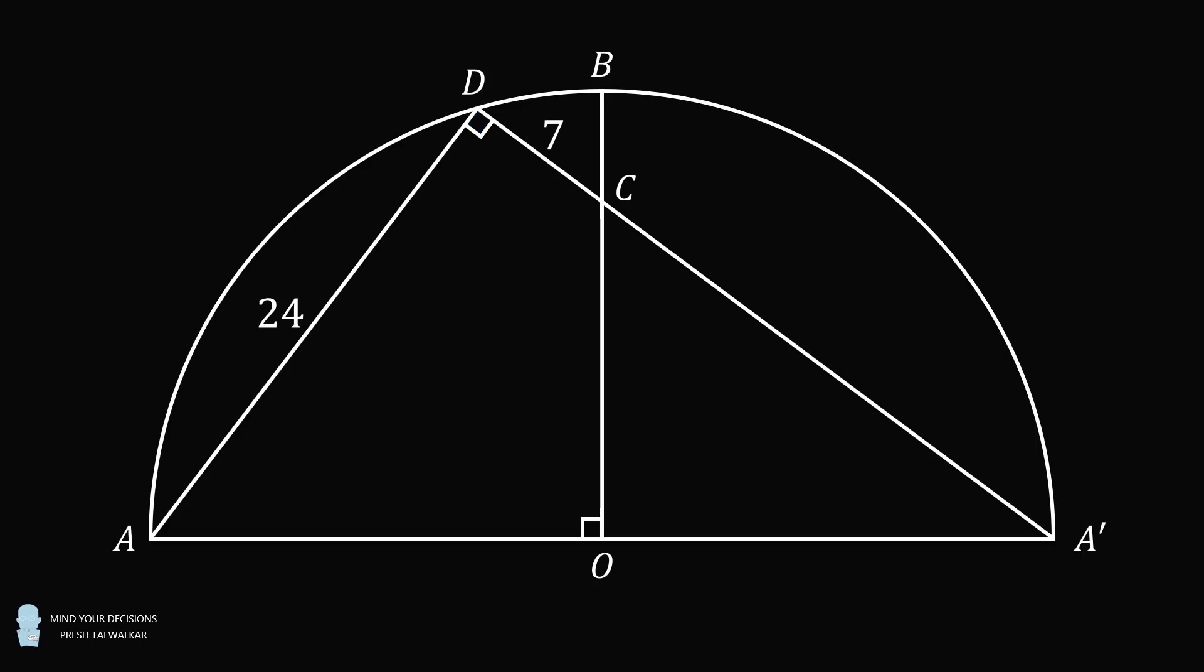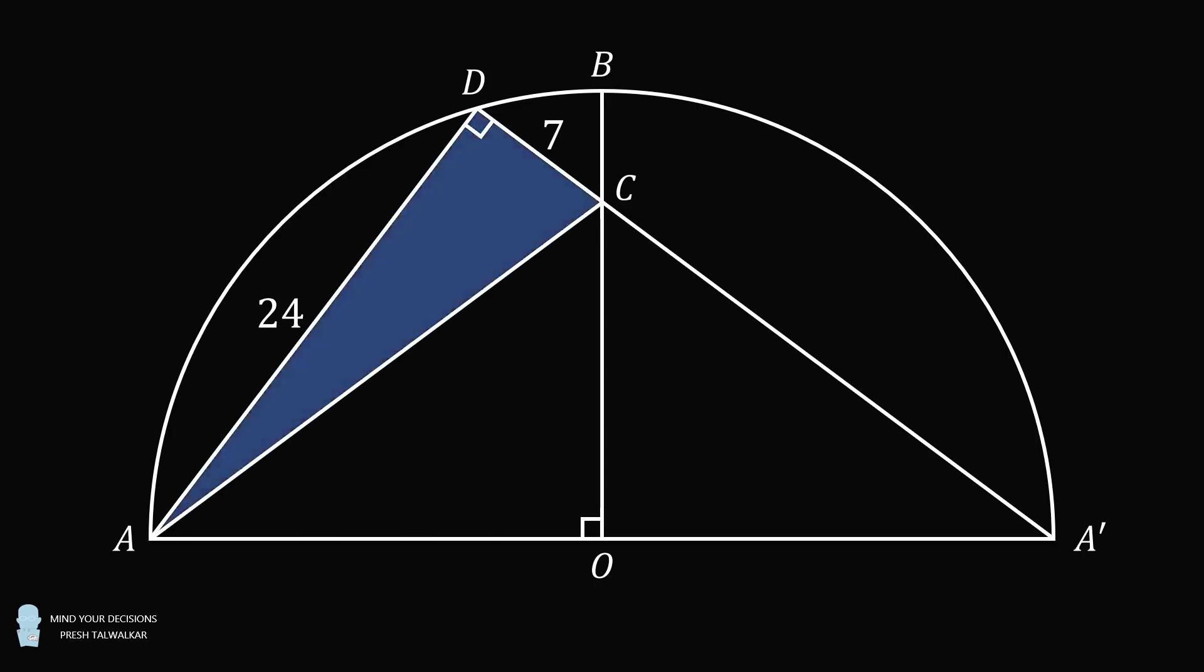So C will connect all the way to A'. Now, construct AC. ADC is a right triangle with legs of 7 and 24. So we can solve for its hypotenuse using the square root of 7 squared plus 24 squared. Or we could just remember the triple 7, 24, 25.